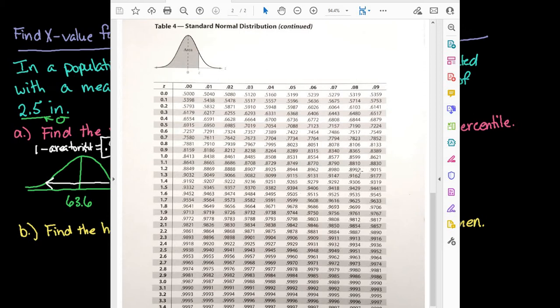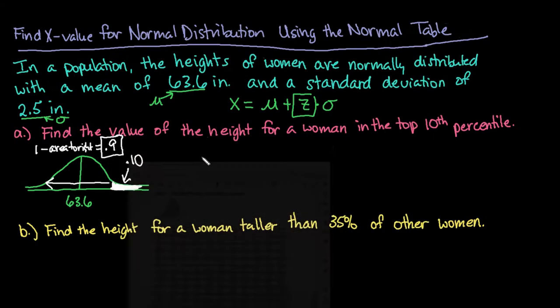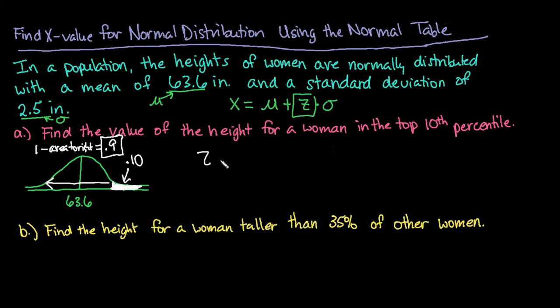That 0.9 falls between those but closer to the 0.8997. So what I'm going to do is come across this row and get 1.2 and I'm going to go up the column to get the last decimal place, 8. So I can say that my z-score is equal to 1.28.